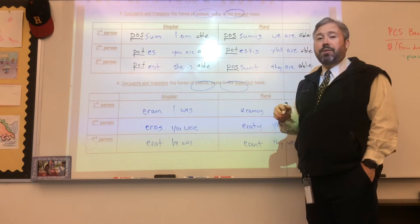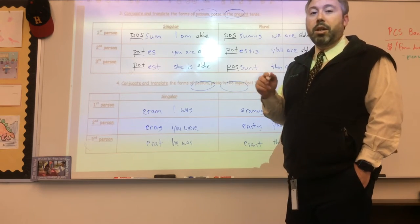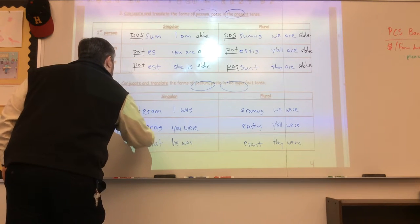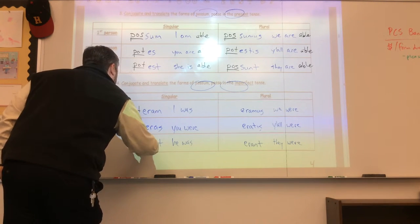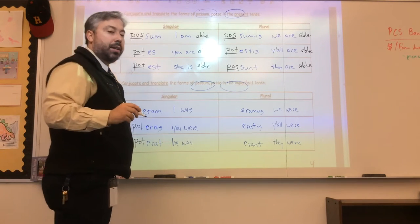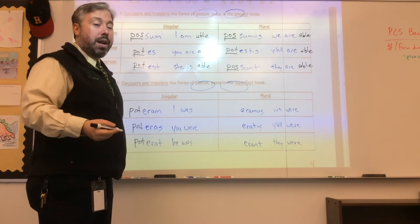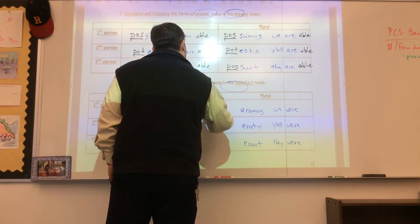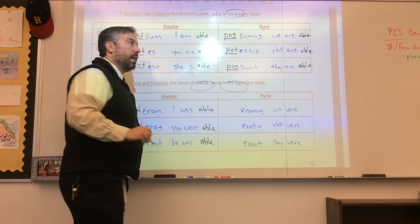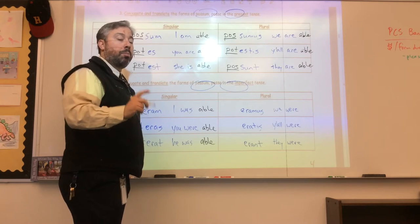The imperfect tense formation is very similar. So we start with eram, eras, erat and you'll notice that we're going to add a POT to every single form. So in the singular you get poteram, poteras, poterat. And the translation is I was able, you were able, she was able. Again, in the plural forms, it goes poteramus, poteratis, poterant.